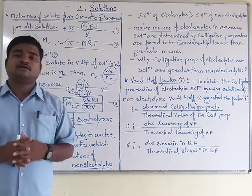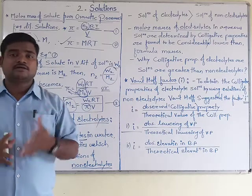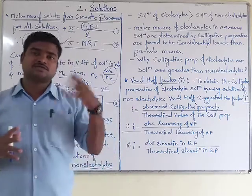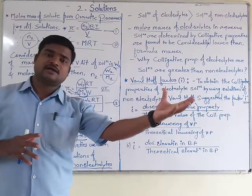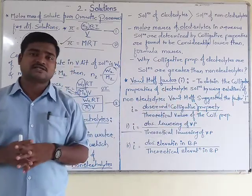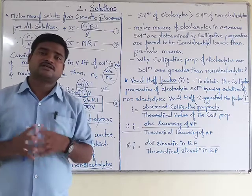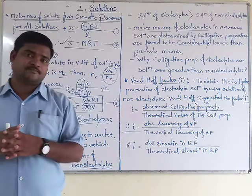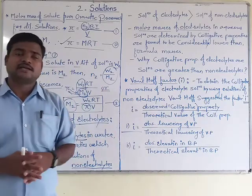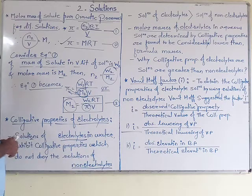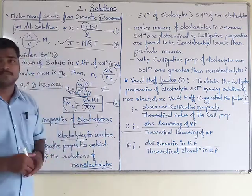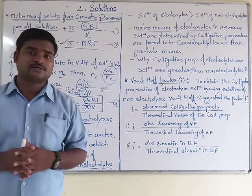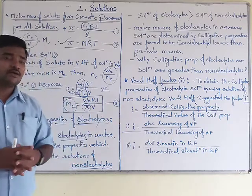If we classify electrolytes into different types, we get strong electrolytes and weak electrolytes. Strong electrolytes can be further classified into strong acids and strong bases. Weak electrolytes can be classified into weak acids and weak bases. What we want to know here is that electrolytes undergo dissociation easily — 100% dissociation takes place.